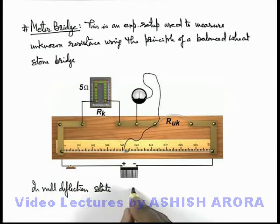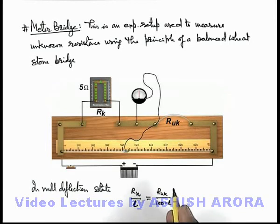Here we can write the ratio of resistance Rk and the length l of the wire must be equal to Ruk divided by 100 minus l. This situation is forming a Wheatstone bridge in which the middle branch with galvanometer is showing null deflection, that means the ratio of left two and right two resistances are equal. If the jockey terminal is taken to be point J, then the resistance AJ and resistance JB are in the ratio of length l and 100 minus l.